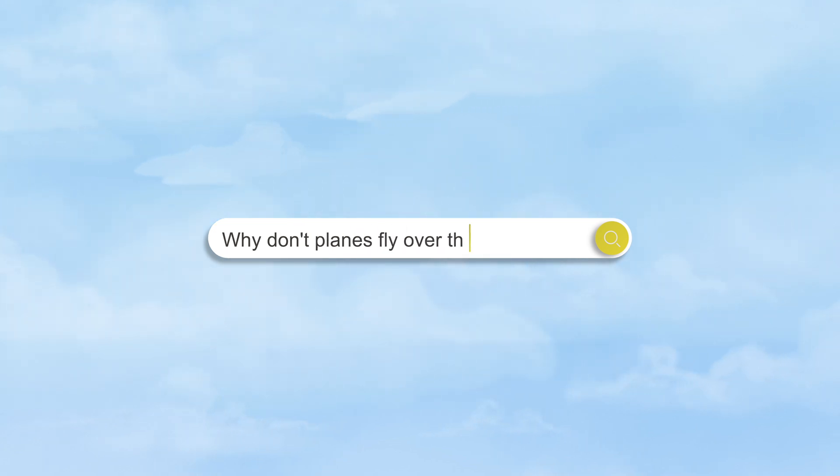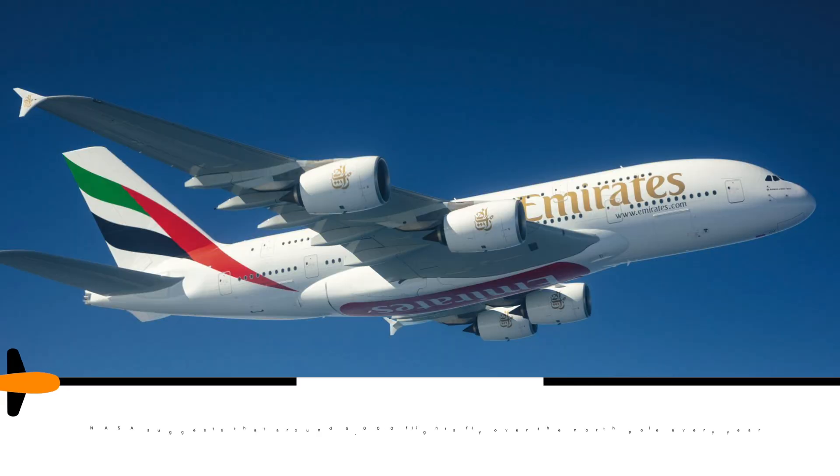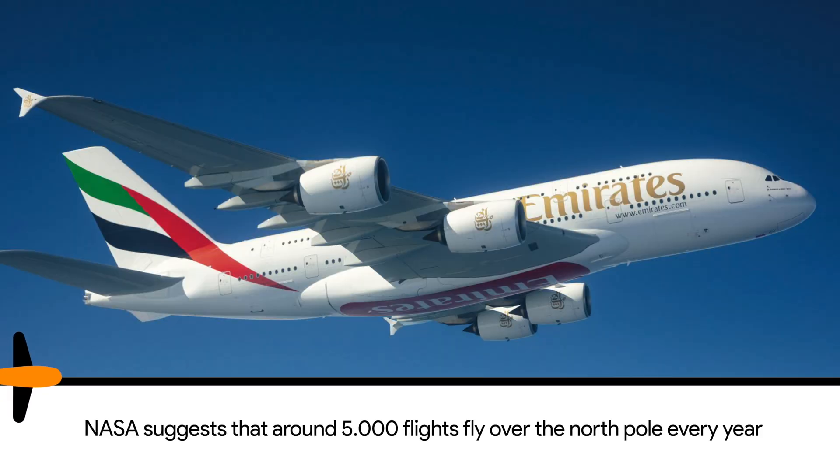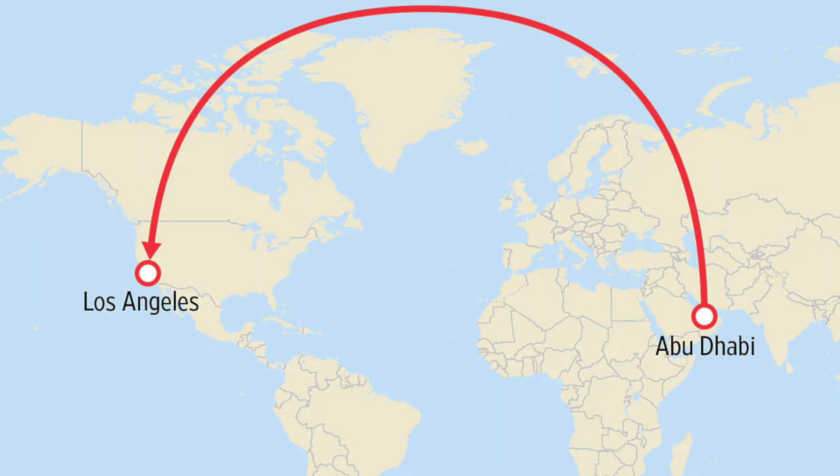Why don't planes fly over the North Pole? Well, they do. Some do. Take the flights from the Middle East — Emirates with the big Airbus A380. They go to San Francisco or LA. You look at the Great Circle route that they're flying and they go dead over the Pole.